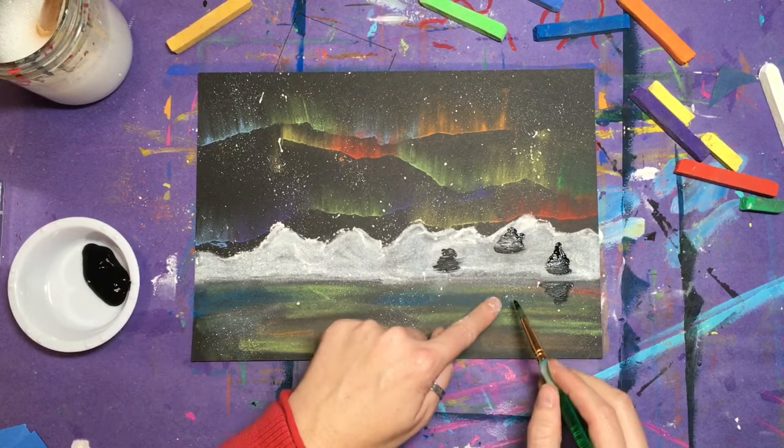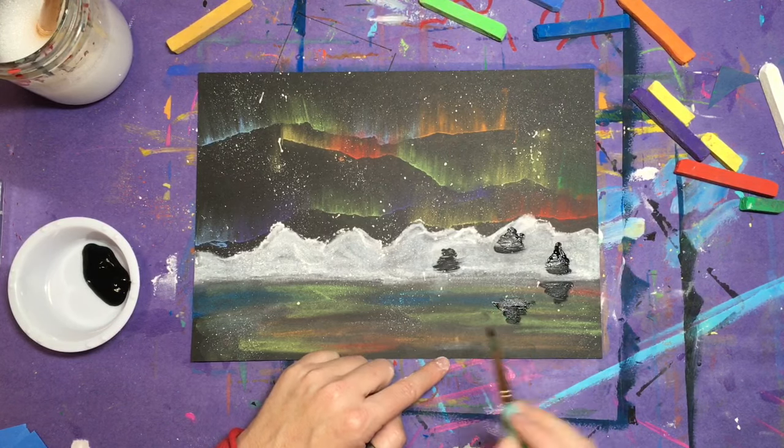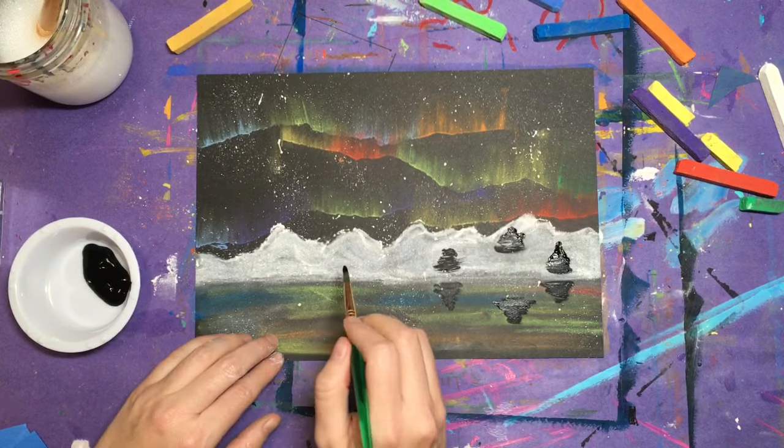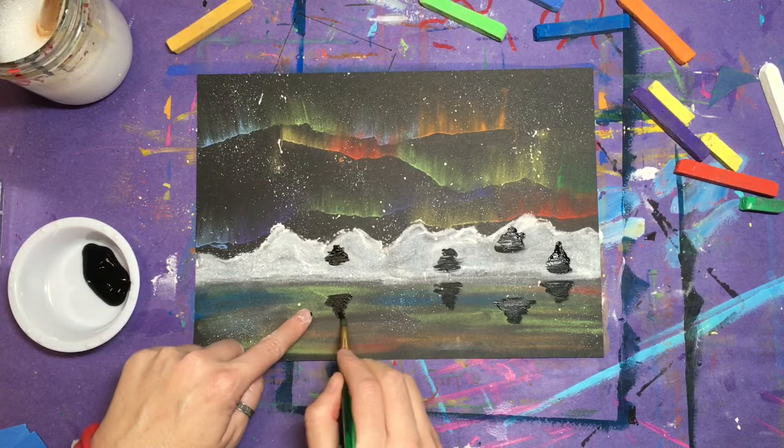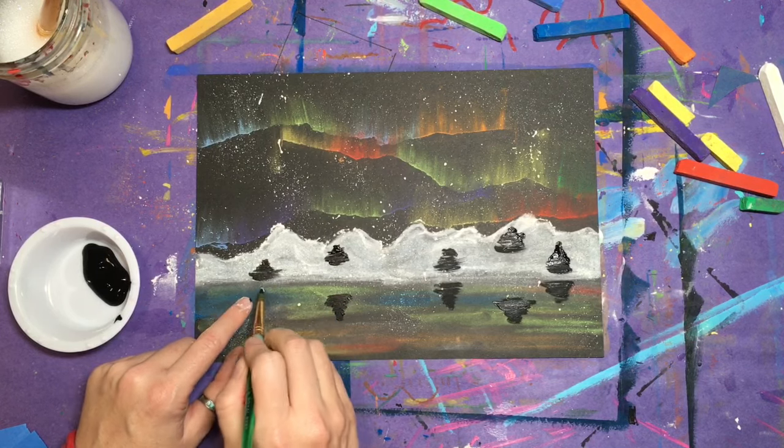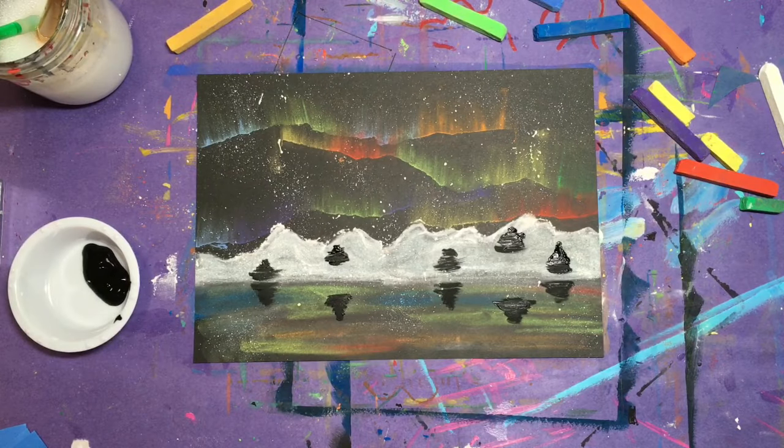But don't forget, we're also going to need to put the reflection of those trees down into the ocean water. Line up your paint brush with your tree down in the water and in reverse, go from bigger to smaller to create the reflection. Do this with each of the trees that you create. And then you'll have your completed Northern Lights picture.